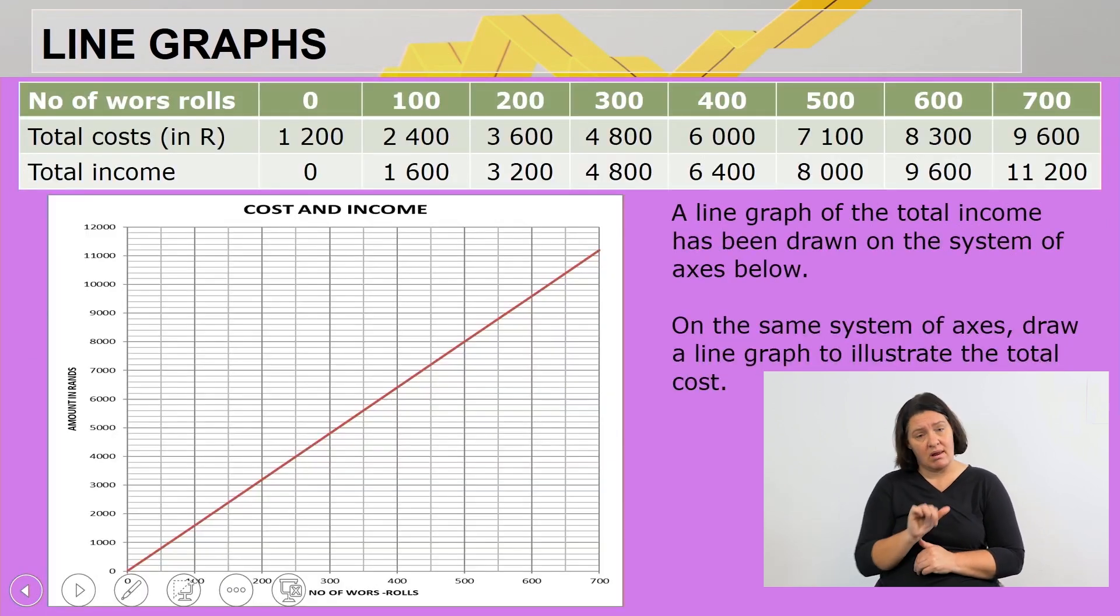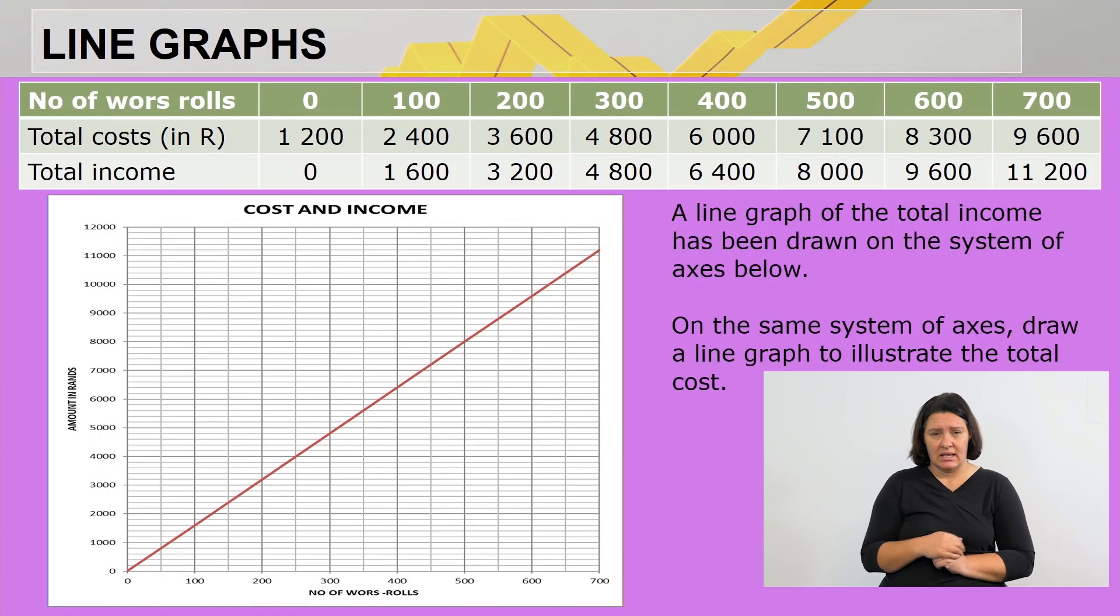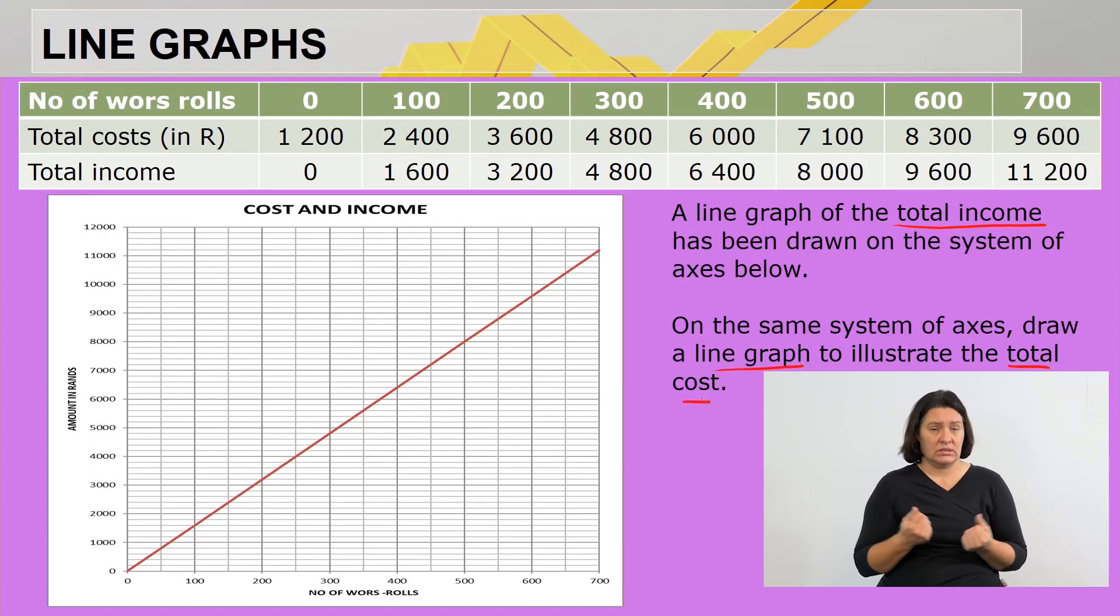A line graph of the total income has been drawn on the system of axes below. There we have the line graph and this represents the total income. On the same set of axes, draw a line graph to illustrate the total cost.